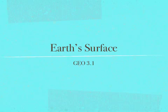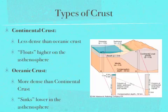Now we begin our second lesson, looking more specifically at Earth's surface. Do you remember the two types of crust? Oceanic and continental. Continental crust is less dense, which means it's lighter, and it floats higher on the asthenosphere. Oceanic crust is more dense, and it sinks lower in the asthenosphere.